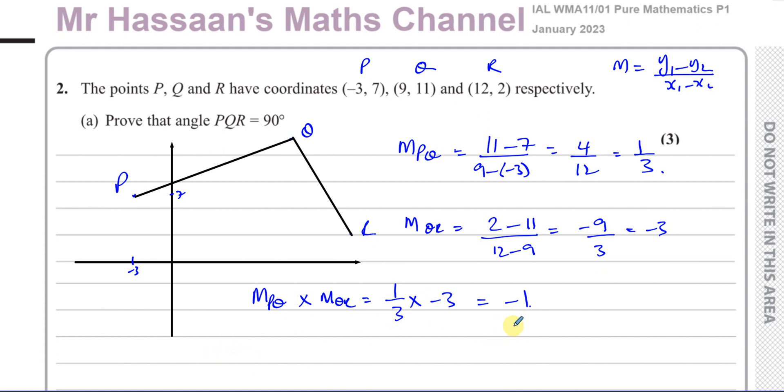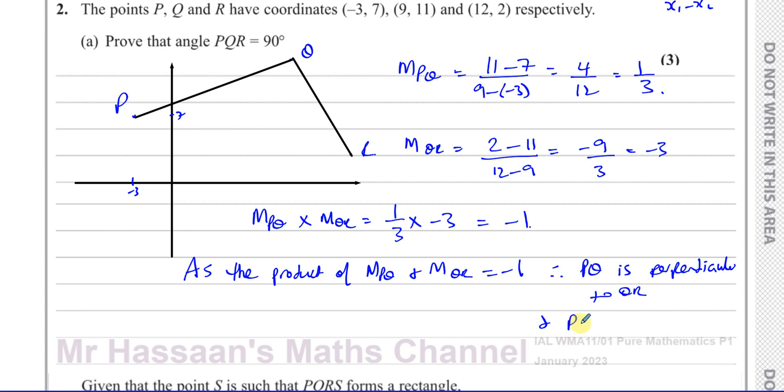We can see that the gradient of PQ multiplied by the gradient of QR gives you 1 third multiplied by minus 3, which is negative 1. Many students will leave the answer like this. They won't mention the conclusion. You should always mention: as the product of the gradient of PQ and the gradient of QR is equal to negative 1, therefore PQ is perpendicular to QR, and that means that angle PQR is equal to 90 degrees. You should write a statement like this at the end. Don't just leave it. You'll definitely lose a mark if you do that.